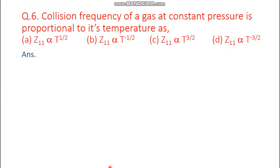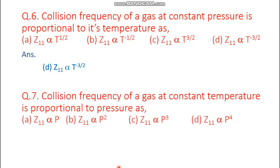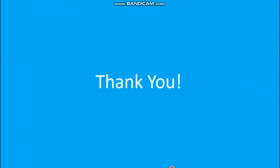Now let's discuss some questions. Question 6: collision frequency of a gas at constant pressure is proportional to its temperature — which option is correct? Since Z11 ∝ T^(−3/2), the answer is option D. Question 7: collision frequency of a gas at constant temperature is proportional to pressure — which option is correct? Since Z11 ∝ p², the answer is option B. That's all for today's lecture — thank you and have a nice day.